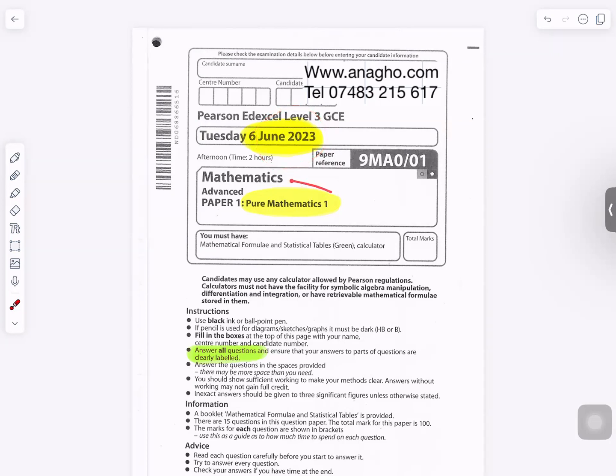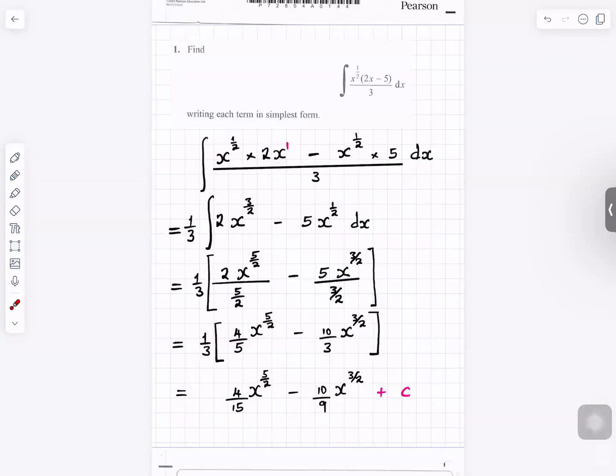Mathematics 2023 pure mathematics paper one advanced level. Question number one: find the integral of that expression, write each term in the simplest form.